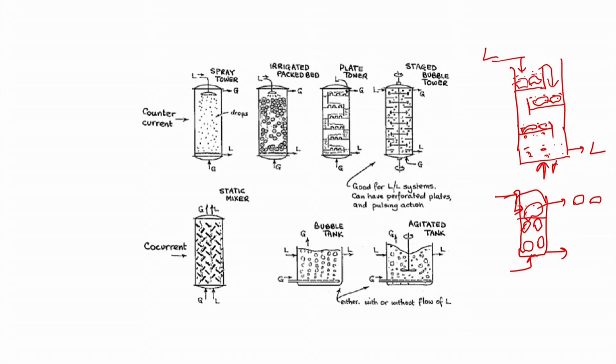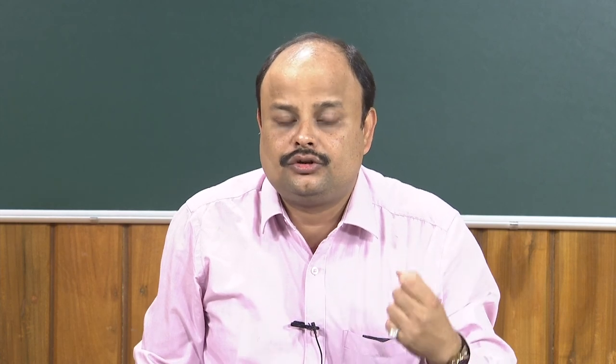We want to always operate in the kinetic-controlled regime. During scale-up, the bubble size distribution changes due to coalescence or breakup. We want to normalize and get the same distribution as at laboratory scale. Various arrangements have been tried — some have worked, some have not, and those that worked did so only for a particular reaction or system. There is no universal solution, which makes multiphase flow more important and complicated to operate.